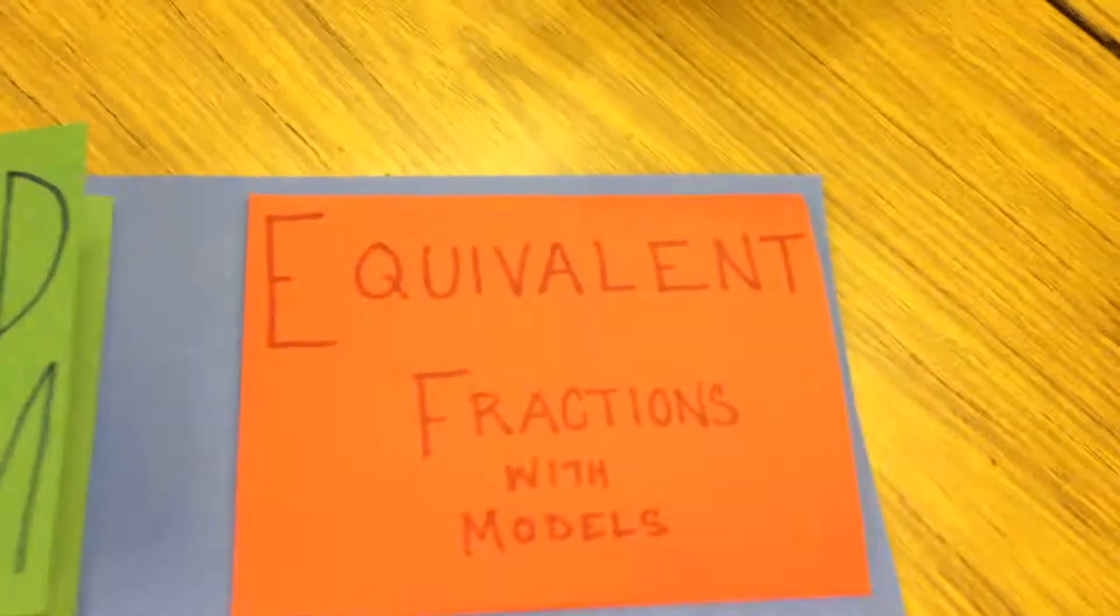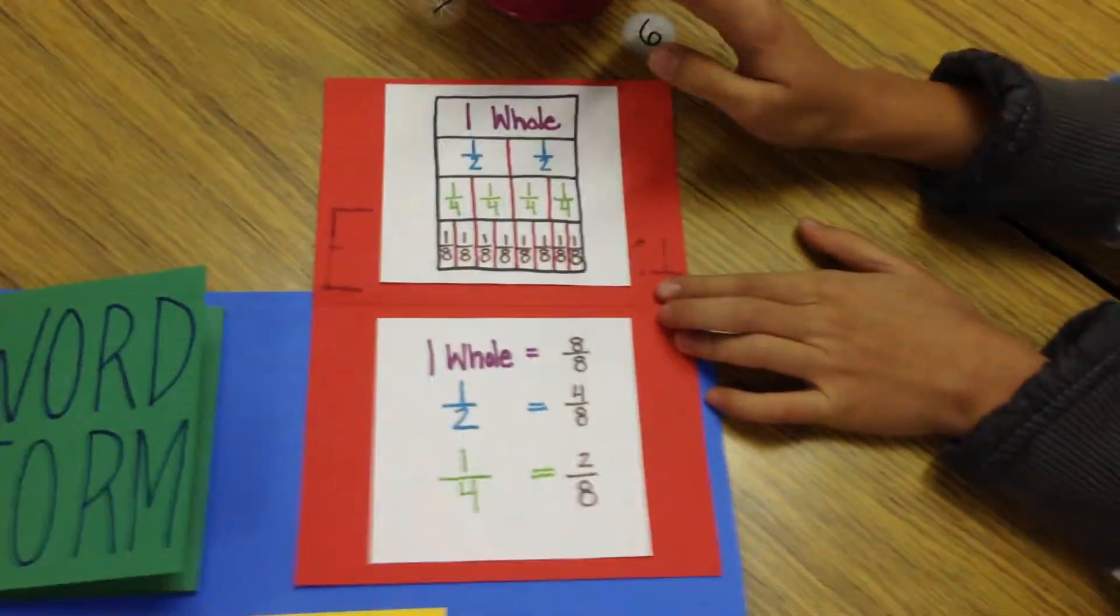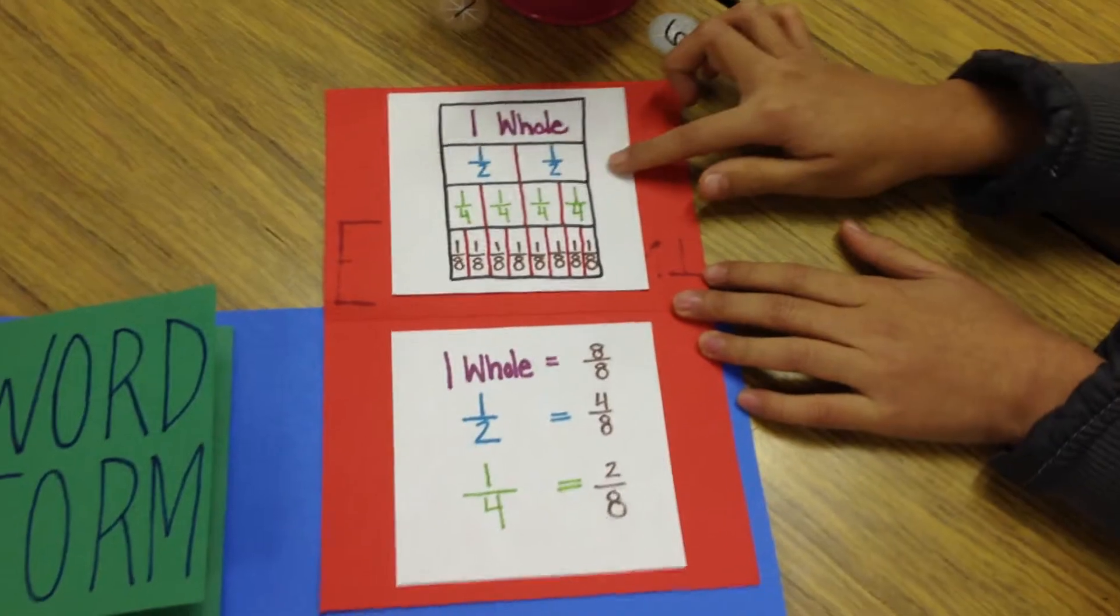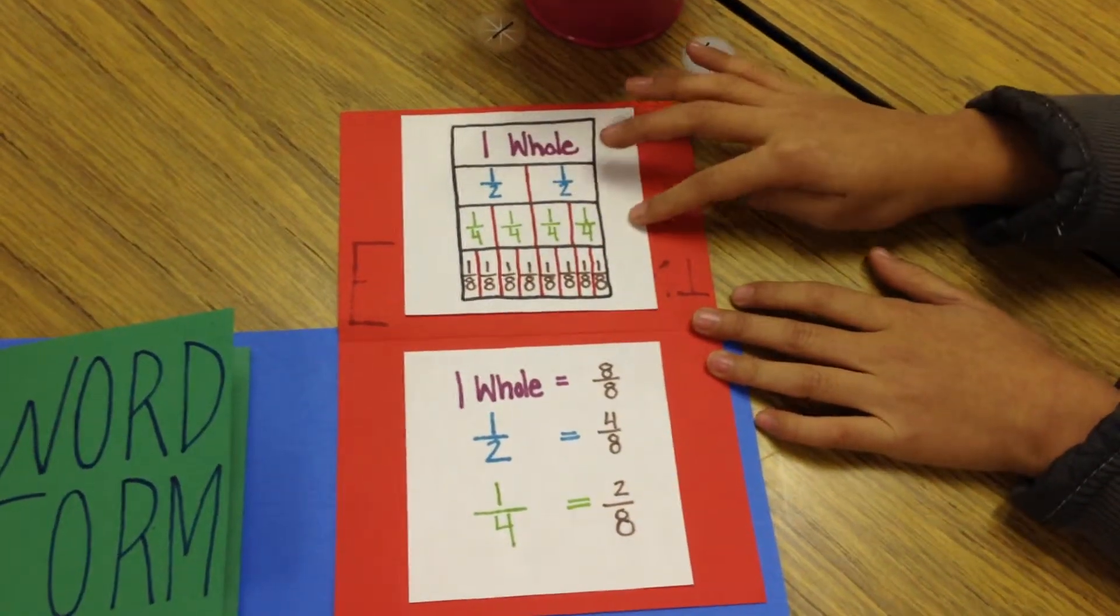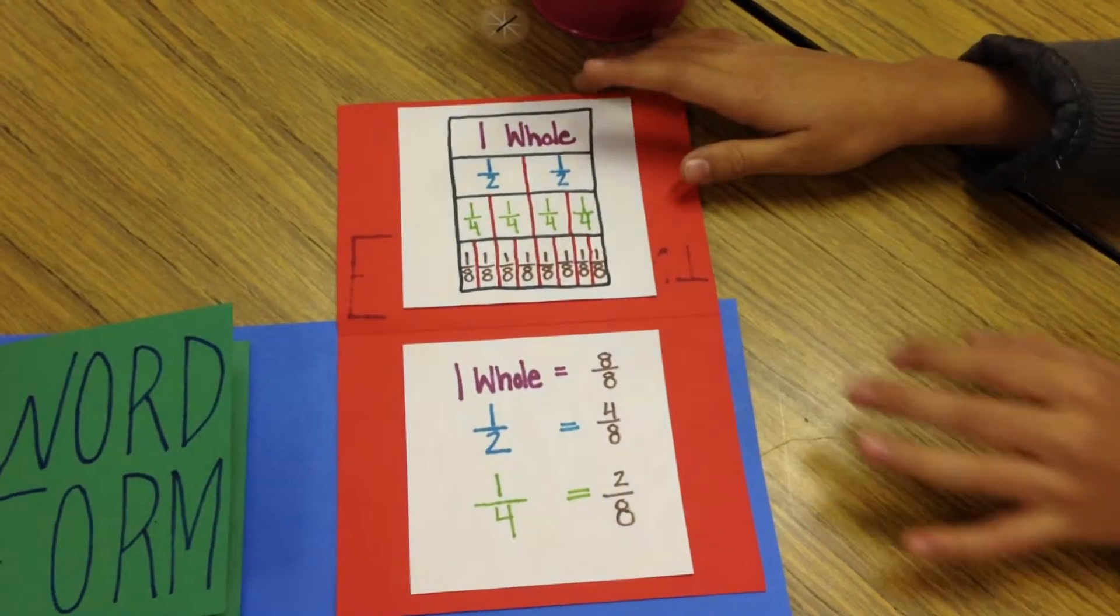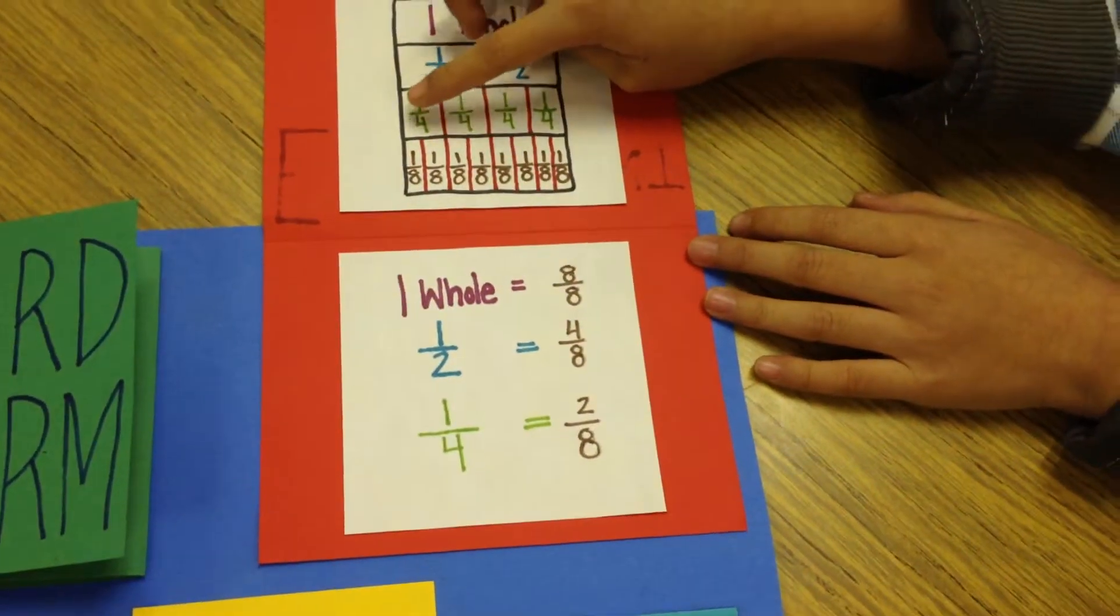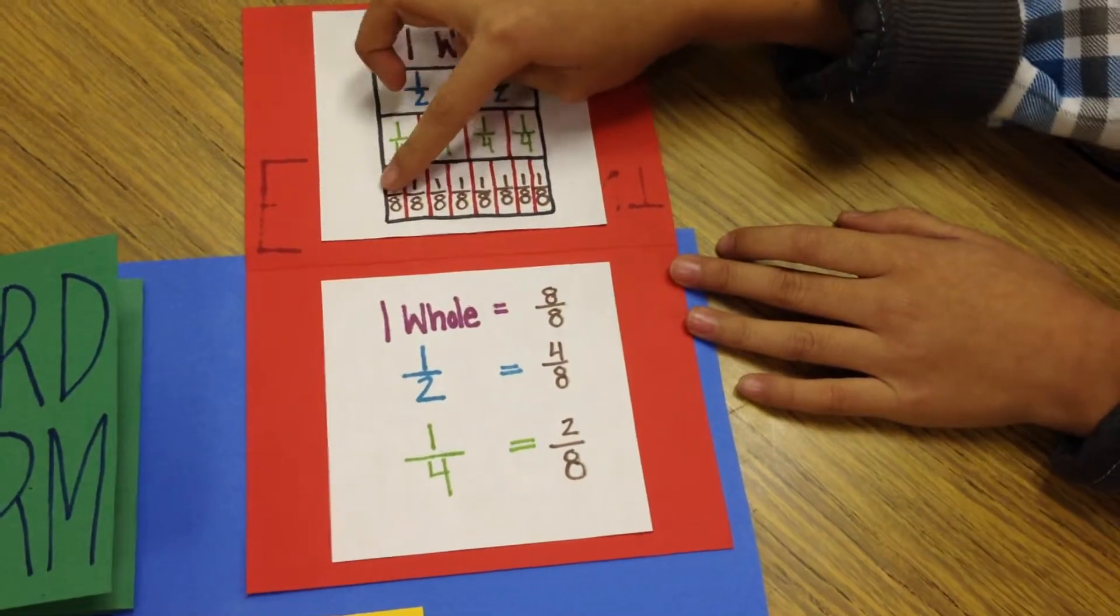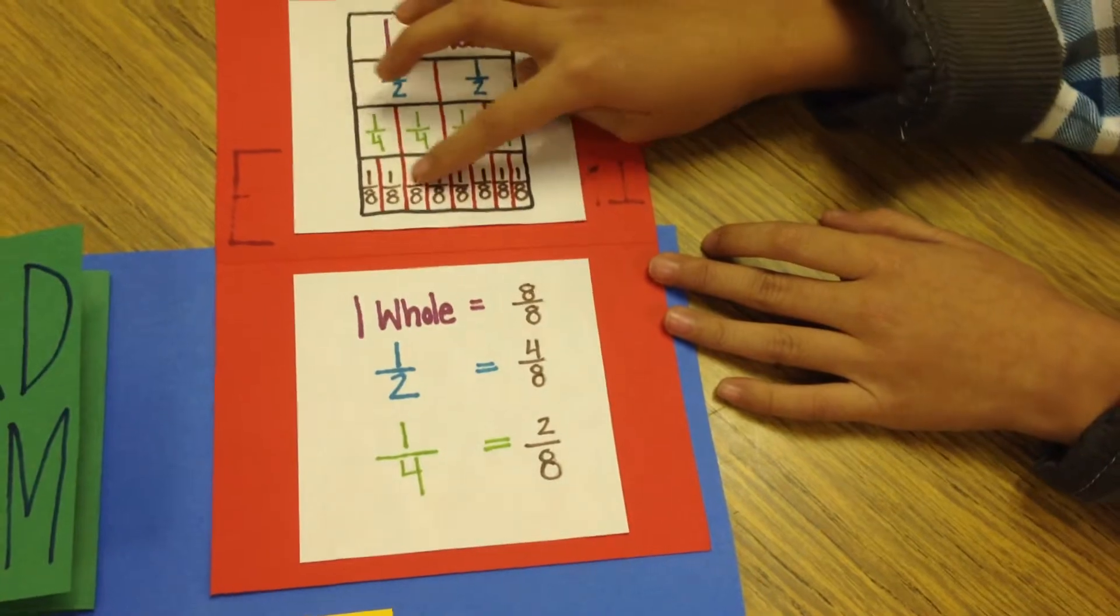And here are the equivalent fractions with models. There is one whole, and two halves make one, and four make a whole, and two of the fourths makes four of the eighths.